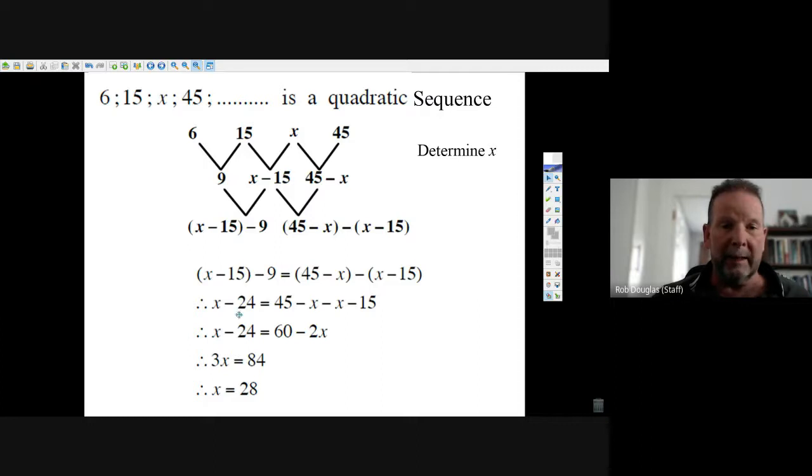Then we have to go 45 minus x and then we have to minus x minus 15, so you have to be careful - put brackets. People mess this up all the time. So you go minus x minus x minus x, that gives you minus 2x. But if you go 45 minus minus 15, that's plus 60.